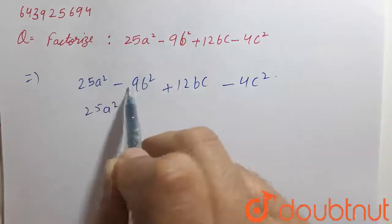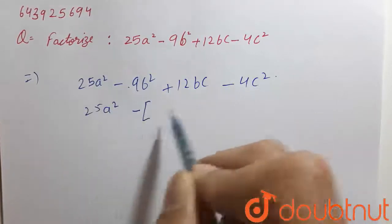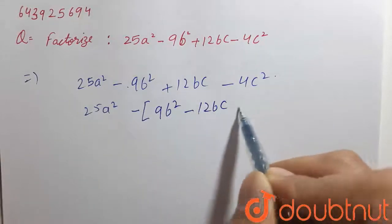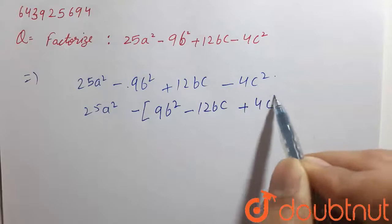Here, taking negative sign common, so inside 9b square minus 12bc plus 4c square.